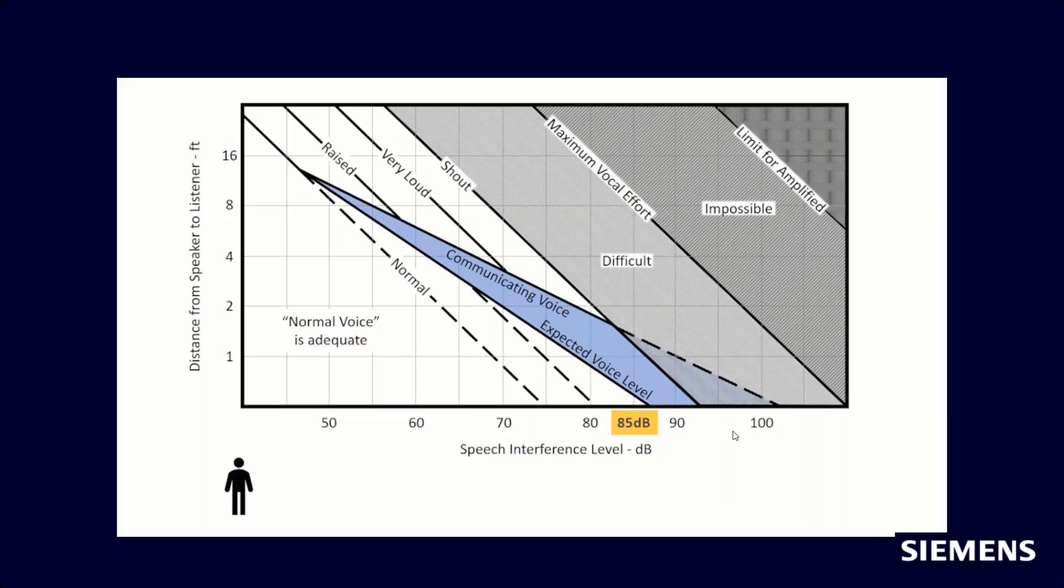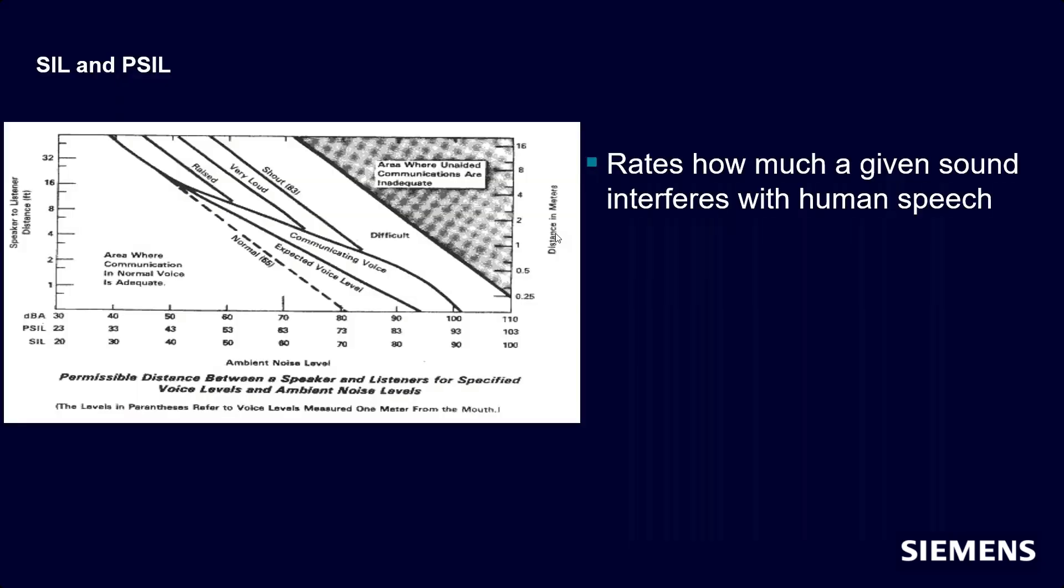So that's the main difference. And these graphs were made around the same time that the standards were coming out. So it tells you how much background noise will interfere with human speech based on not only the levels, but also the distance.